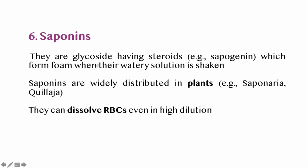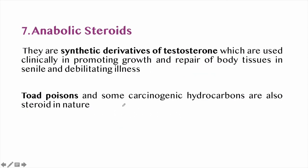Saponins are glycosides having steroids which form foam when their watery solution is shaken; they are widely distributed in plants and can dissolve RBCs even in high dilution. Anabolic steroids are synthetic derivatives of testosterone (a male sex hormone) used clinically in promoting growth and repair of body tissues in senile and debilitating illness. Toad poison and other carcinogenic hydrocarbons are also steroidal in nature.